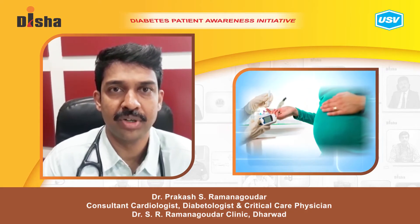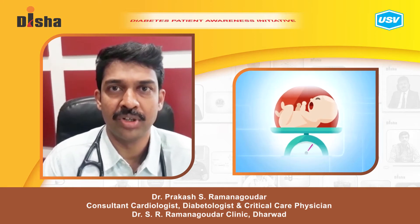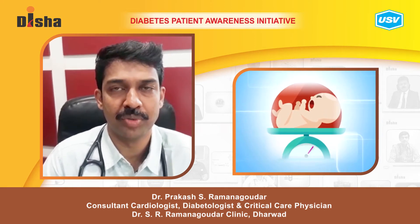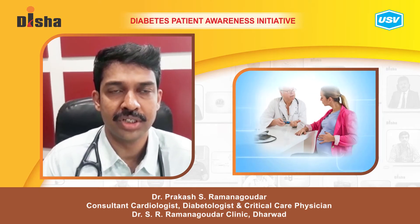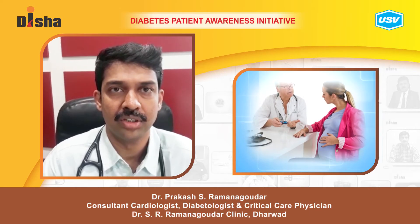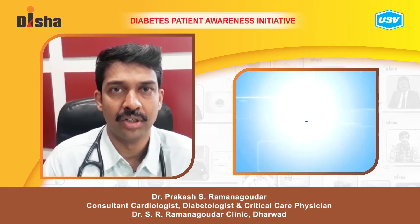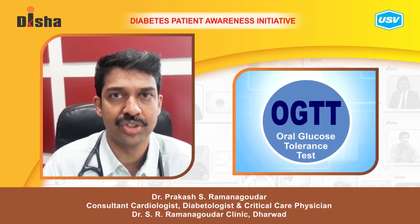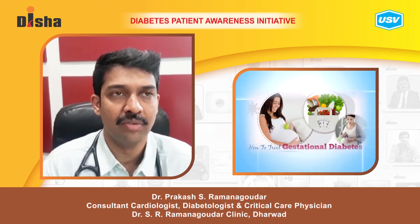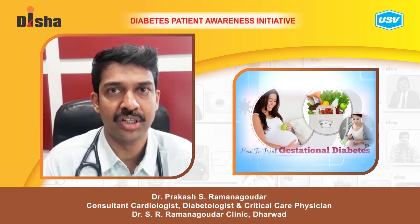Diabetes in pregnancy has adverse outcomes for both fetus and mother, including congenital anomalies, preterm labor, and postpartum hemorrhage. For gestational diabetes screening, we test all pregnant women at the first antenatal visit using an OGTT — 75 grams of glucose — and check blood sugar after 2 hours. If it is more than 140, we diagnose gestational diabetes and plan treatment including medical nutrition therapy and insulin.